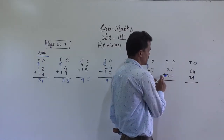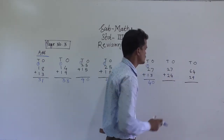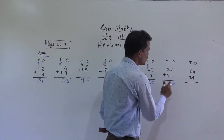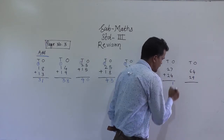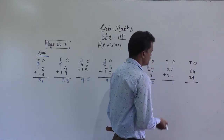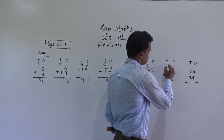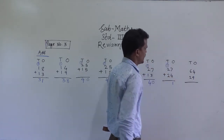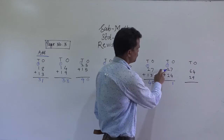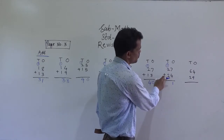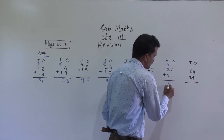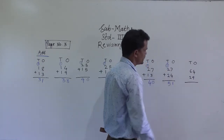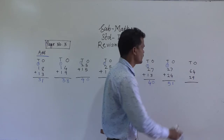Next example: 27 plus 24. 7 plus 4 is 11, so write 1 here and carry 1. 2 plus 2 is 4, plus 1 carry is 5. So 51 is the answer.